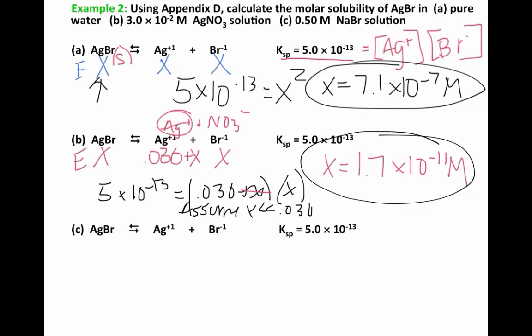Now we can compare parts A and B. When we didn't have any common ions, our molar solubility was 7.1 times 10 to the negative 7th. When we add a common ion like silver plus, our solubility goes down — at equilibrium we cannot put as many moles per liter of solution.